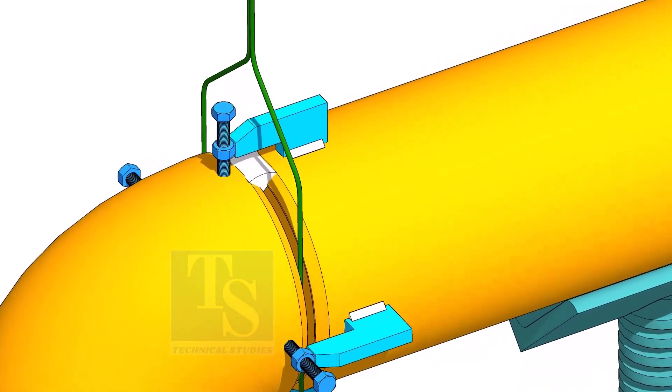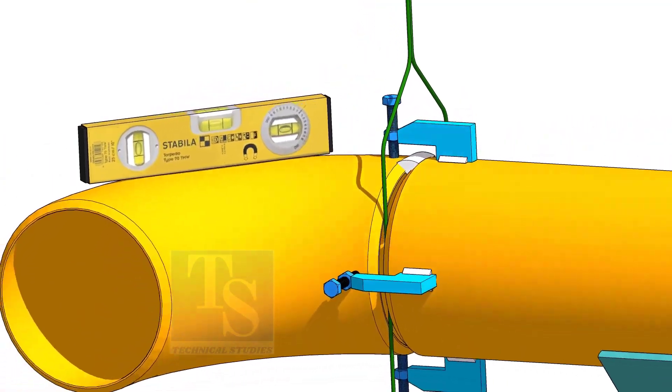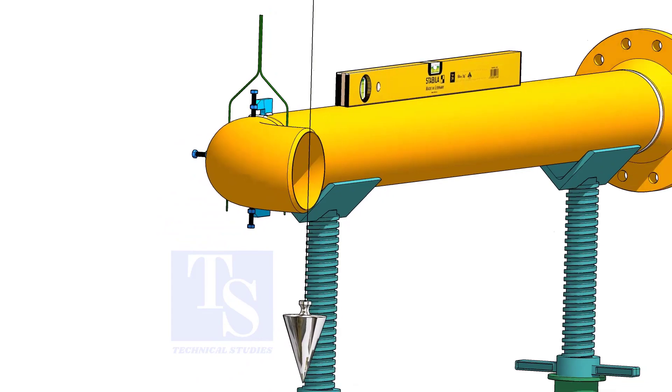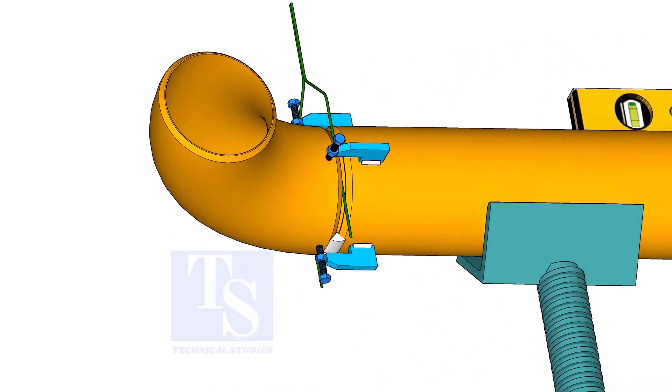Tack weld on the top of the joint. Check the top level of the elbow. Tack weld in the bottom side of the joint.